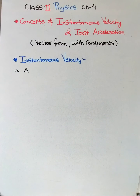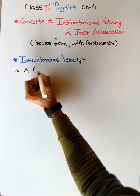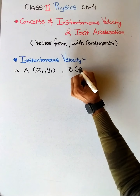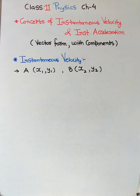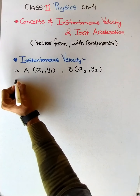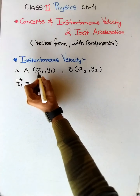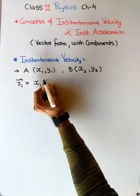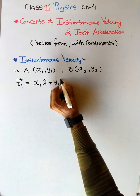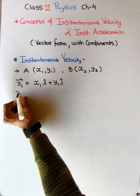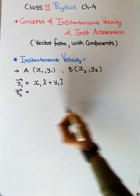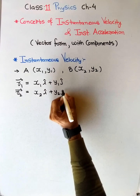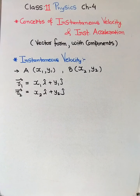Suppose there are two points A and B whose coordinates are (x1, y1) and (x2, y2). Now let us suppose that r1 is the position vector of the first point, represented as x1·i + y1·j along with the unit vectors. And r2, the position vector of point B, will be x2·i + y2·j. So r1 and r2 are the position vectors.